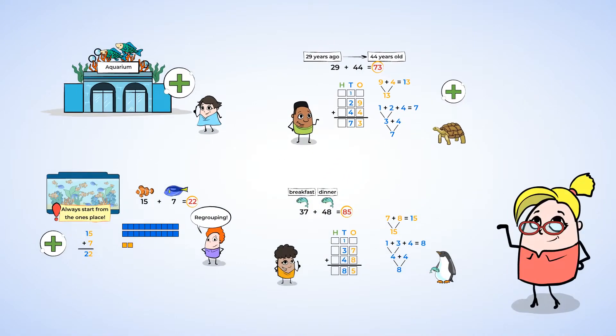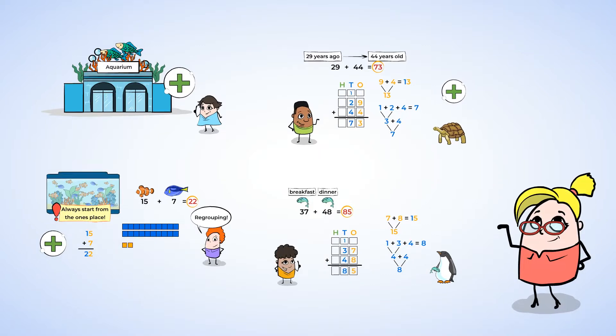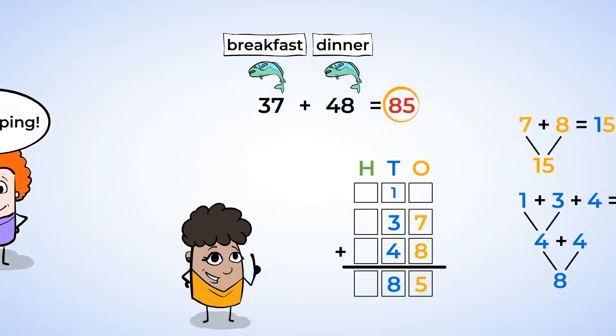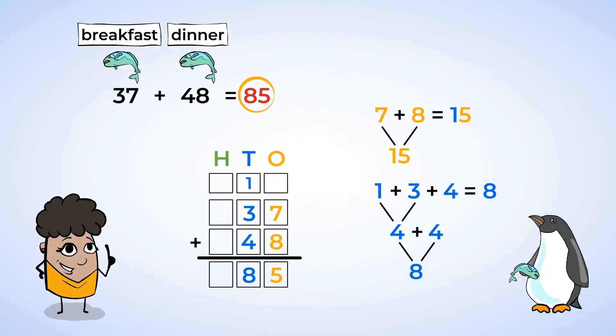Great work today! We practiced adding 2 digit numbers and modeling the problems using base 10 blocks and place value charts. We learned to regroup by taking 10 ones and turning them into a 10 stick. We showed this with base 10 blocks, and we also showed it by writing a little 1 in the tens column of the equation. This helps us stay organized and not make little mistakes.